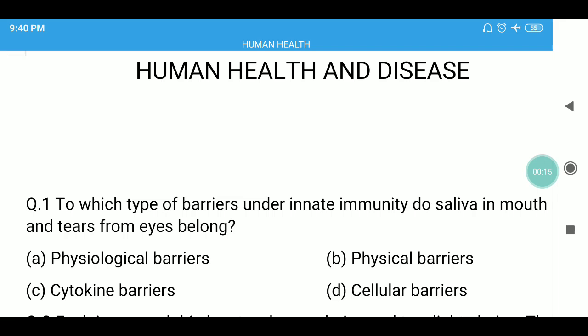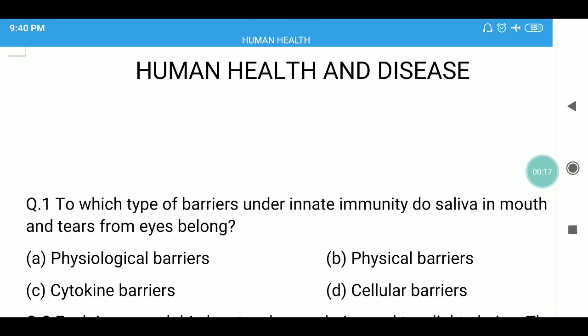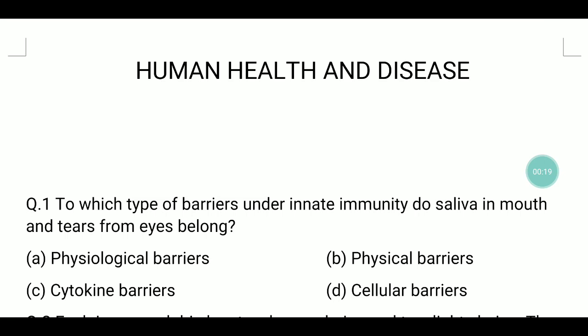Question number one: to which type of barrier under innate immunity do saliva in mouth and tears from eyes belong? In our body there are many barriers — physical barriers, cellular barriers, cytokine barriers. Saliva in the mouth and tears from the eyes fall into physiological barriers.